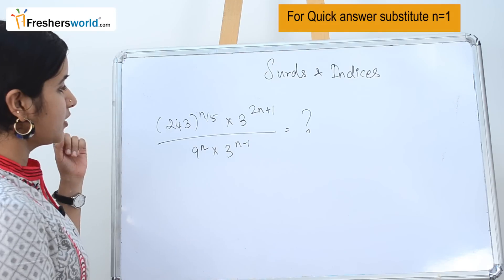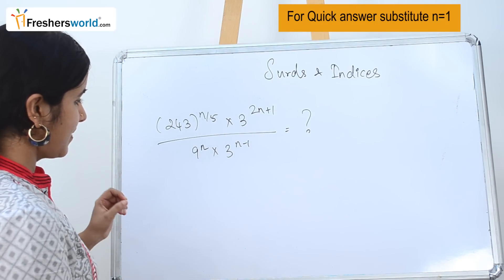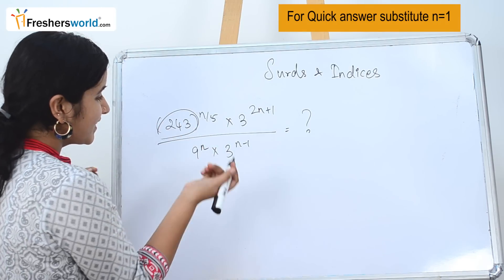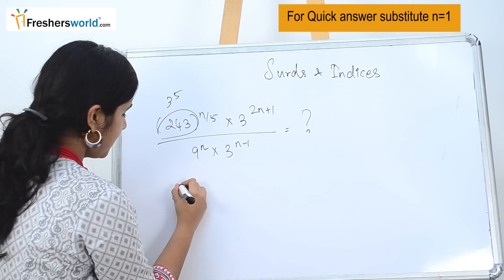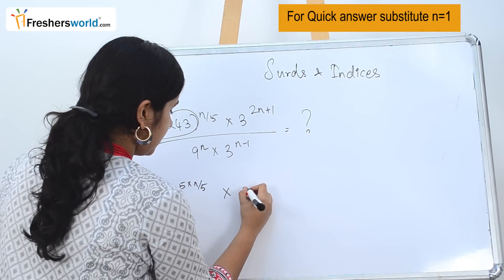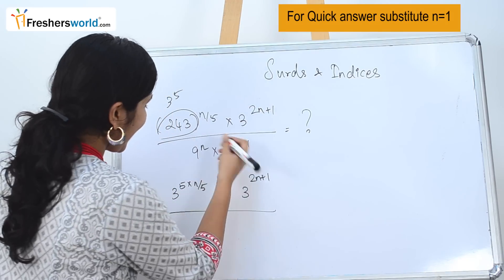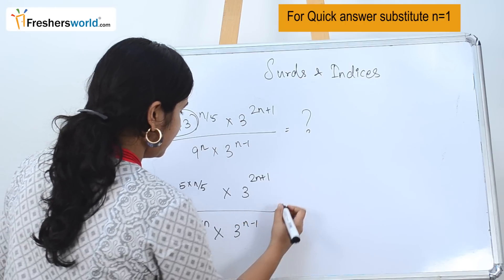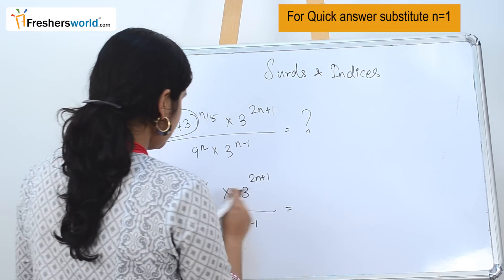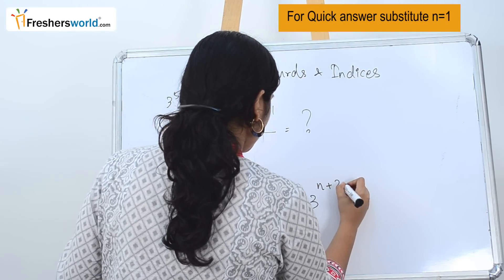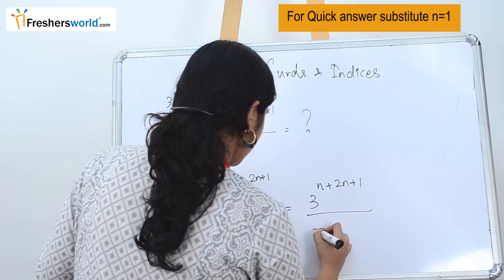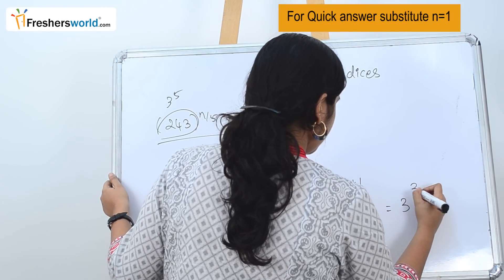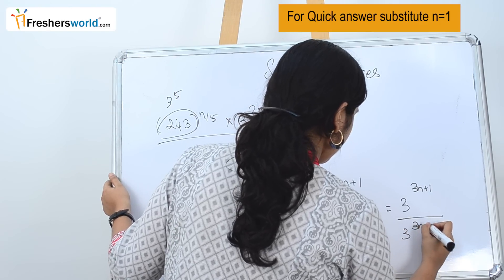The next question is: 243 to the power n by 5, into 3 power 2n plus 1, divided by 9 power n into 3 power n minus 1, is equal to what? We know that 243 is nothing but 3 power 5. So 3 power 5 into n by 5 gives us 3 power n. The 5's cancel. Then multiplied by 3 power 2n plus 1, giving n plus 2n plus 1. Similarly, 9 is rewritten as 3 power 2, giving 3 power 2n into 3 power n minus 1, which is 3 power 3n minus 1. So we have 3 power 3n plus 1 divided by 3 power 3n minus 1.